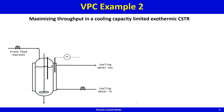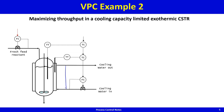Example two: maximizing throughput in a cooling-capacity-limited exothermic reactor. We have a jacketed reactor with cooling water going in and out, a fresh reactant feed, and reactor temperature controlled in a typical cascade arrangement, with cooling water circulating in a loop.